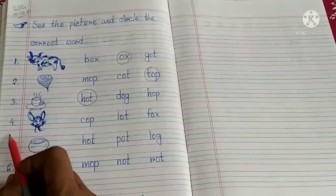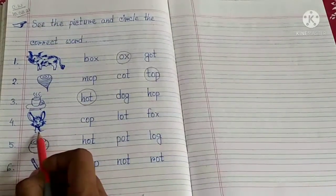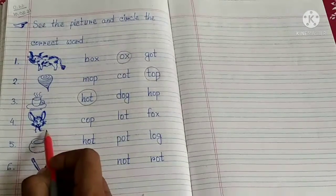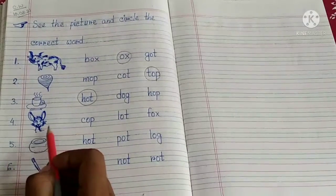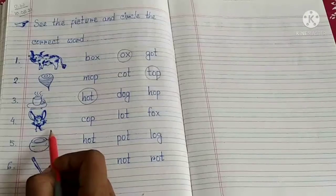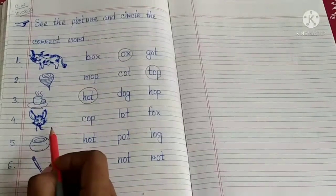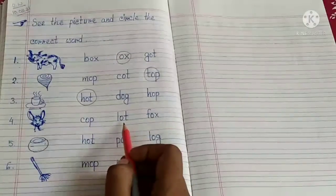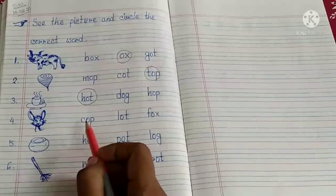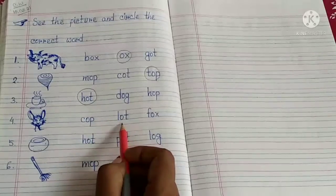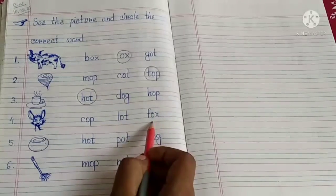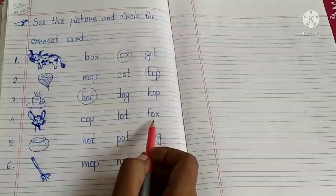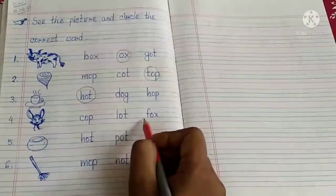Number 4. What is this? This is a fox. So what is the spelling of fox? Tell me first. F-O-X, fox. Right. Let's find the word from here. Let us read the words: cop, lot, fox. So here we got fox. Now let's circle it.